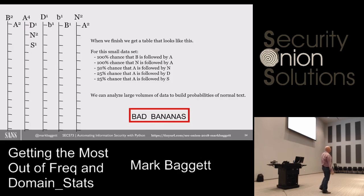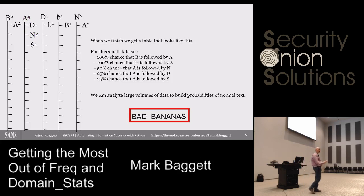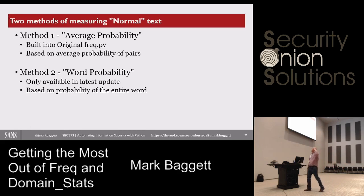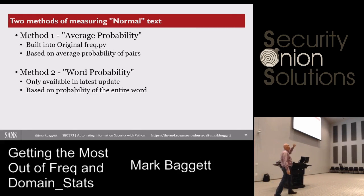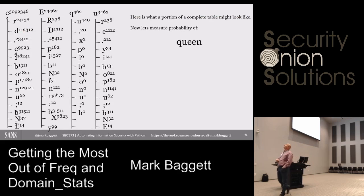I measure this for all my domains and come up with a frequency table. Now you can ask me: using this table, what's the probability that a given string is normal? We can see there's a 100% chance that if you have a B, it's going to be followed by an A. If you have the letter A, there's a 50% chance it's followed by N, a 25% chance it's followed by D, and a 25% chance it's followed by S. So I can measure the probability of character pairs coming together. There are two ways to determine whether a domain is normal or abnormal: the average probability method and the word probability method.